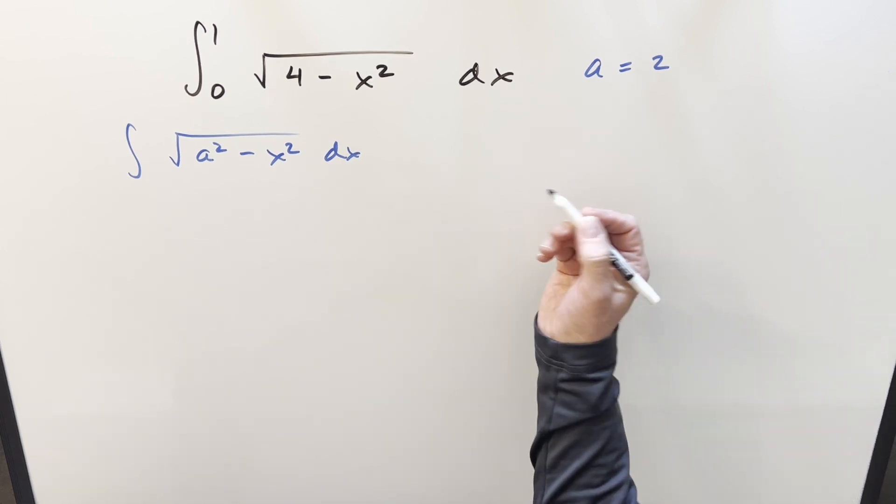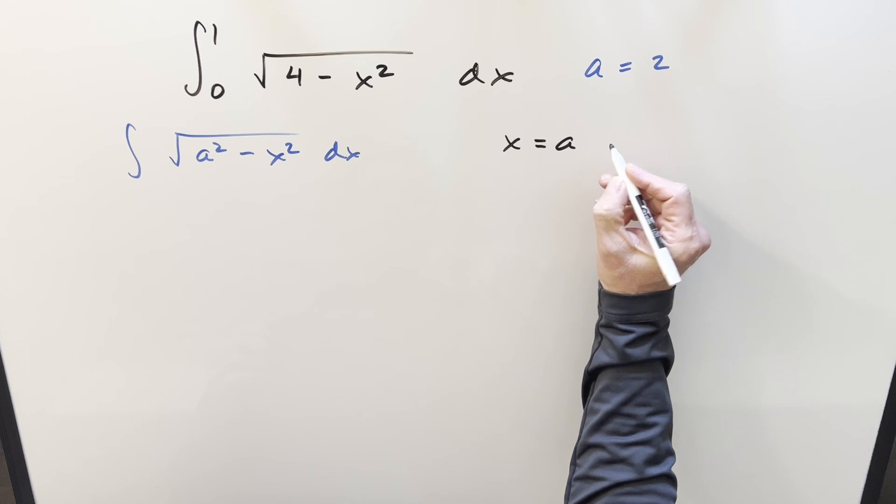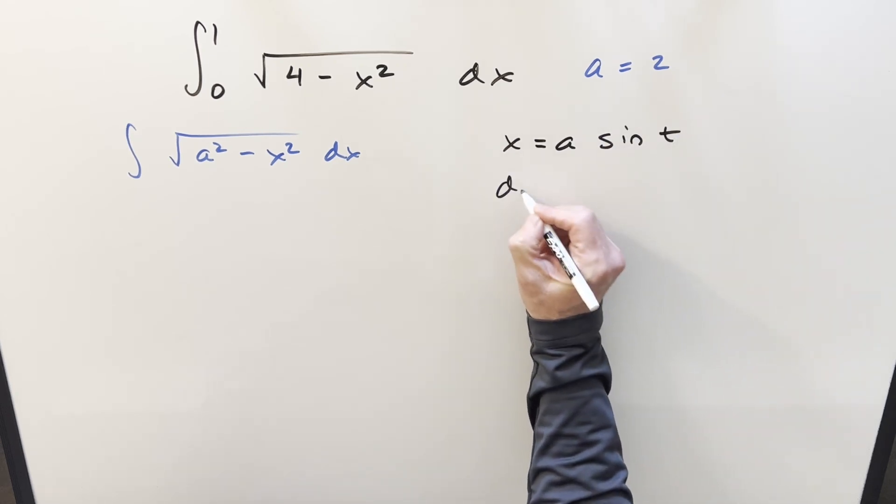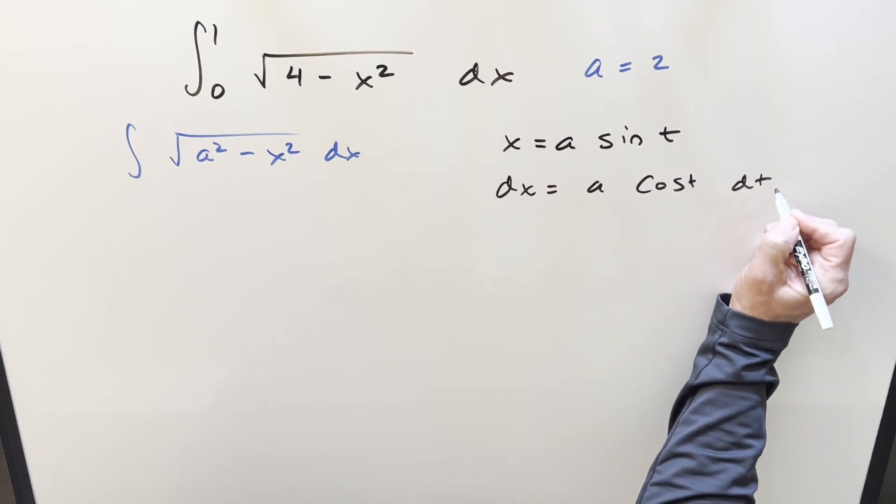So for our problem, it's going to be a equals 2 and we need to plug in later. From here, it's just going to be trig substitution. There might be different ways, but let's do trig substitution. So I'm going to set x equal to a sine of t, then dx is going to be a cosine t dt.